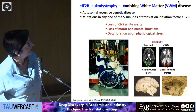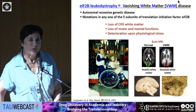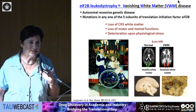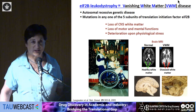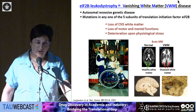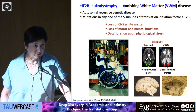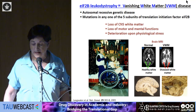EF2B leukodystrophy is also called vanishing white matter disease, or VWM disease. This is a recessive neurodegenerative, very rare disease due to mutations in either of the five genes that encode for the five subunits of EIF2B. This is a translation initiation factor. The disease is manifested by loss of CNS white matter, loss of motor and mental functions, and it deteriorates upon physiological stress, with death around the early teens.